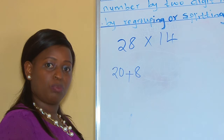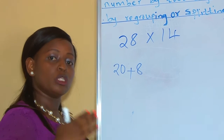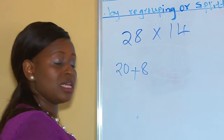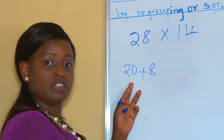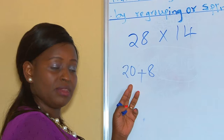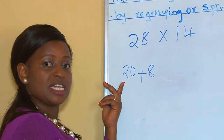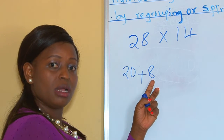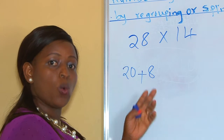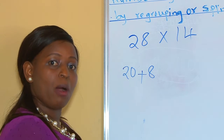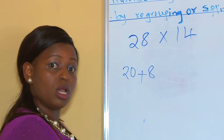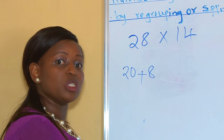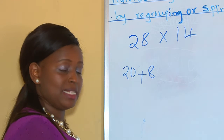When you are regrouping or splitting, you split in such a way that your work has powers of 10 — that is 20 here, and then 1s. By this, we are simplifying our multiplication because it is easier to multiply using powers of 10.